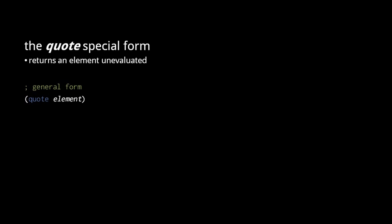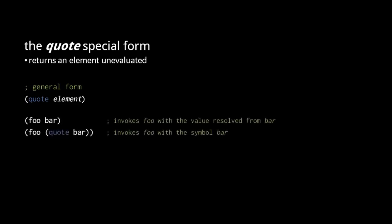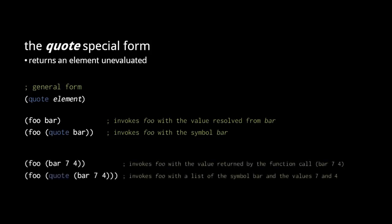The quote special form takes just one expression, which it returns unevaluated, meaning it returns lists and symbols as themselves. The lists do not get evaluated as function calls, macro calls, or special forms, and the symbols do not get resolved to vars or local bindings. The quote form is useful mainly in macros which are meant to return unevaluated reader data. Some functions also expect to receive lists and symbols as arguments, so quote is useful when calling those functions. Because quote is used frequently enough, the reader provides special syntax: a reader element preceded by a single quote mark is implicitly enclosed in a quote form.